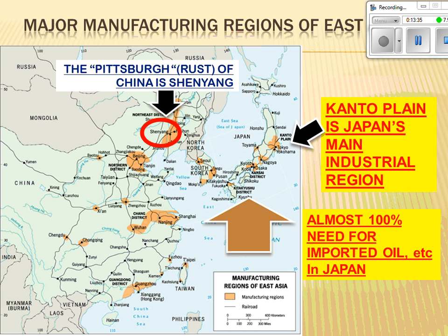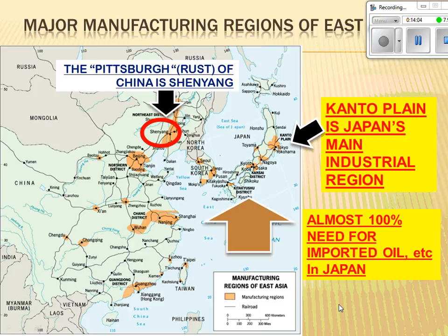In terms of East Asia, China and Japan are huge industrial regions. The Kanto Plain is a major industrial region for Japan. Shenyang is sort of the Rust Belt or Pittsburgh of China, but Beijing and Shanghai also have huge development. China is also trying to move industrial areas into the hinterlands or central China, which is a trend to watch going forward.